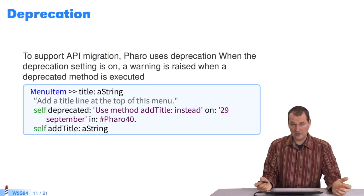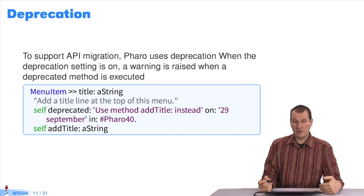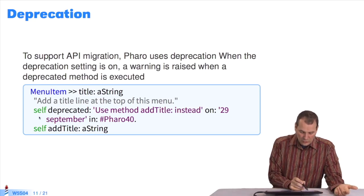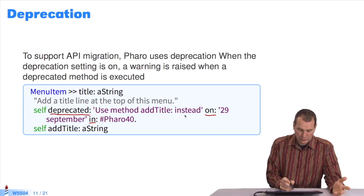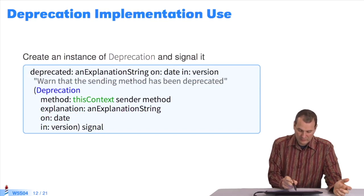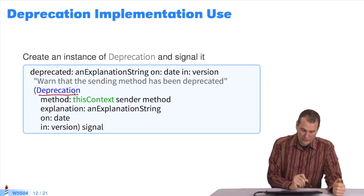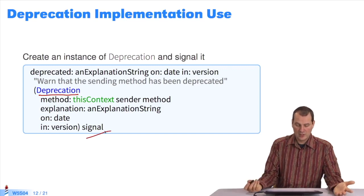We have Deprecation, for example, which means if you use an API which evolves over time and which Pharo has decided is no longer valid — how do we do that in Pharo? We say 'deprecated on: in:'. Here I've chosen a clear example: MenuItem title, and it says 'use the method addTitle instead of title'. It's implemented as: 'deprecated' creates an exception called Deprecation, within which I pass the method, explanation, on, and in — which gives a signal. So deprecation and message not understood are exceptions we create and raise.